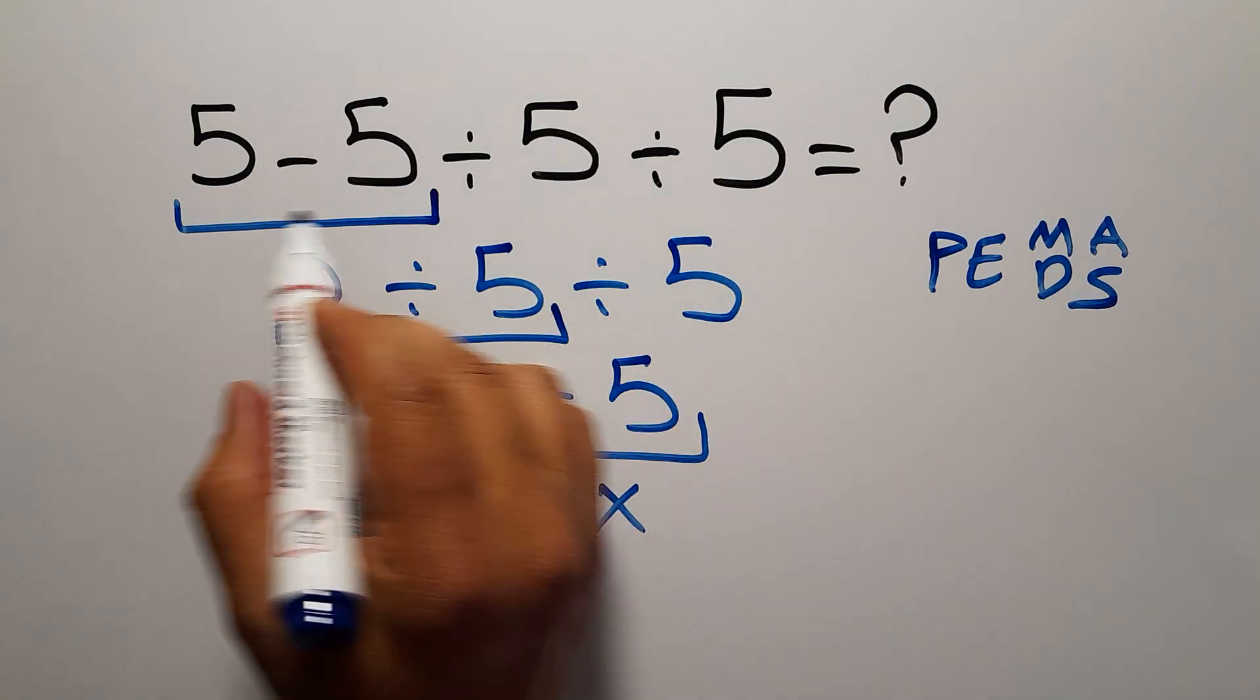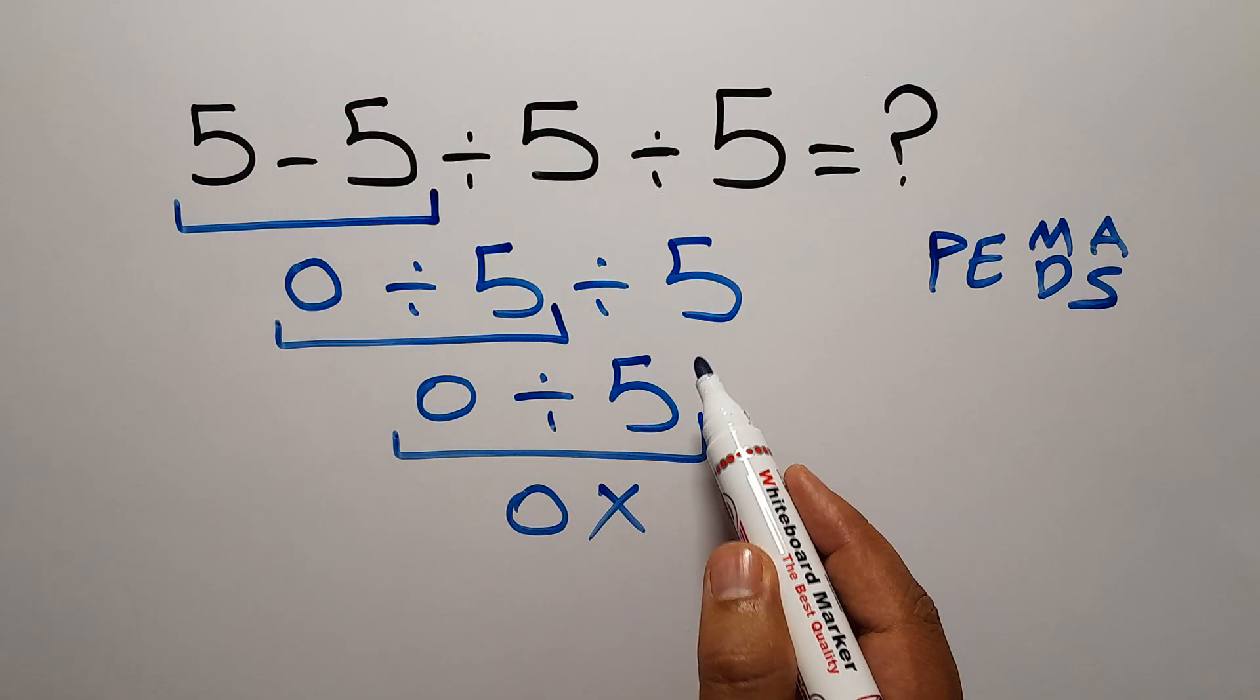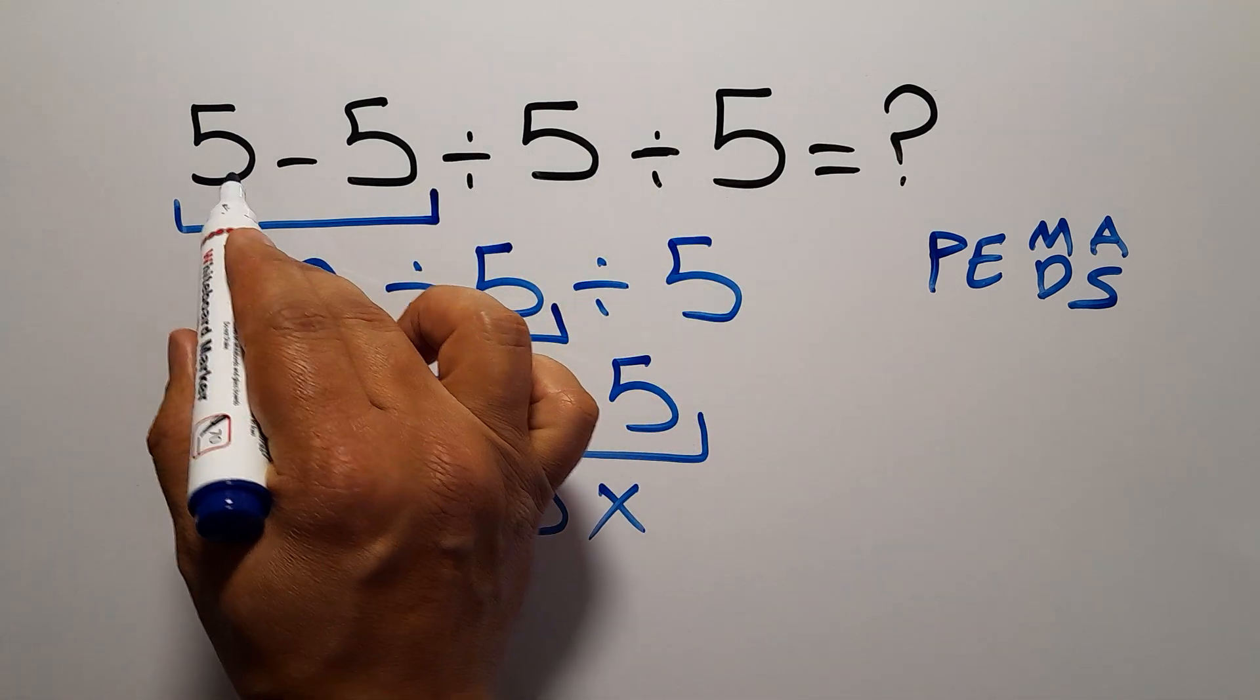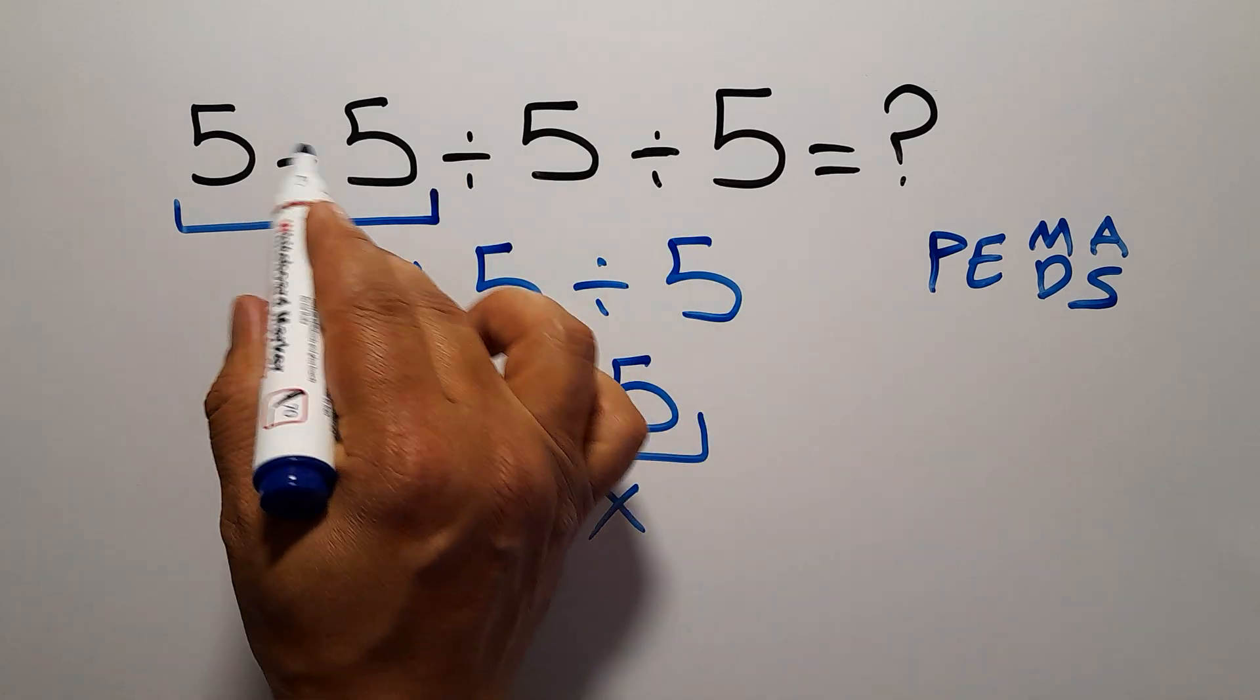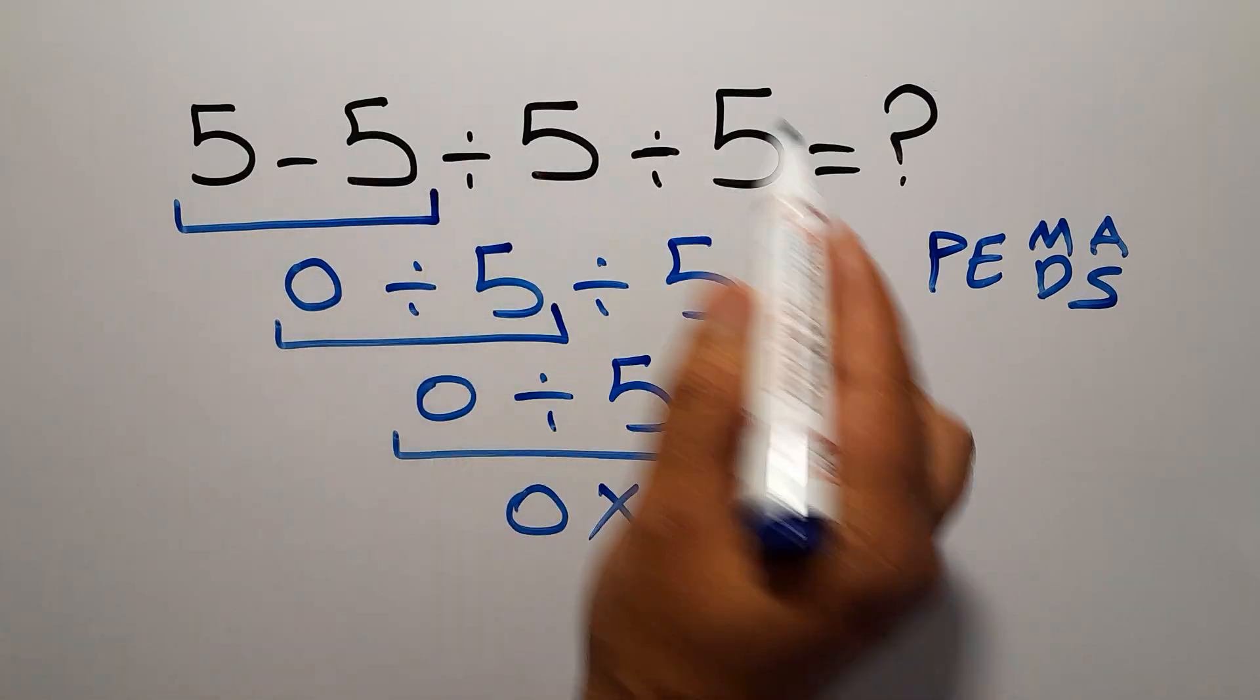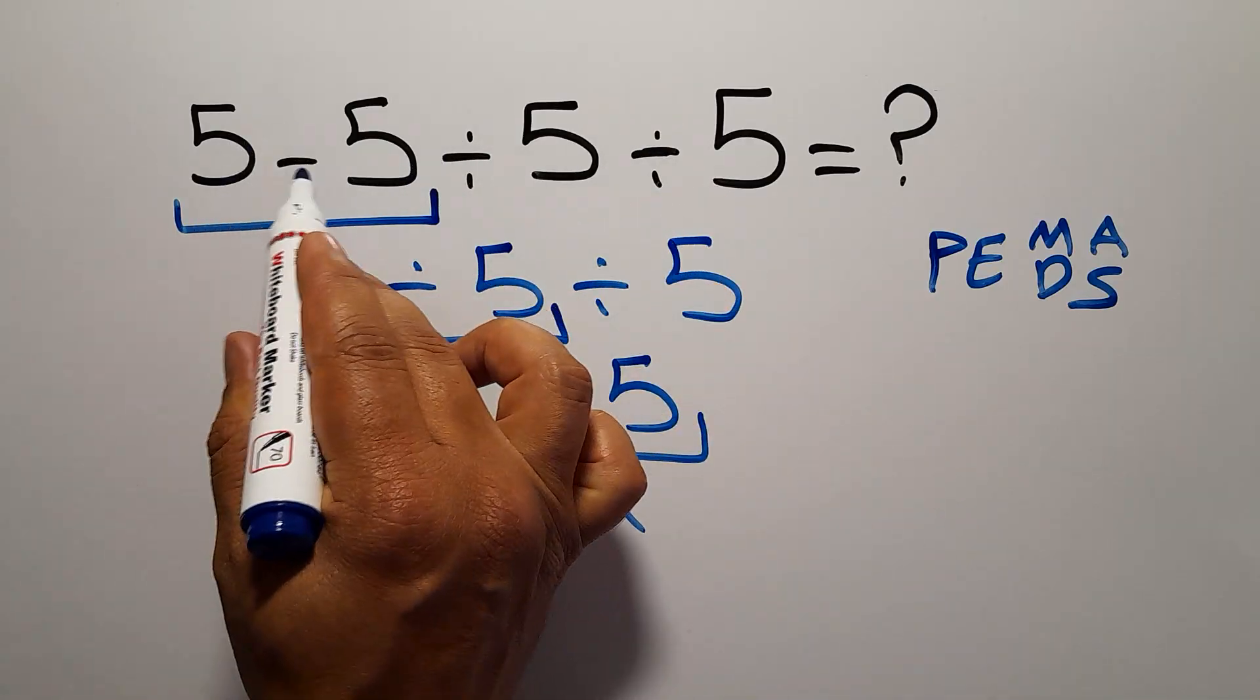So here in this expression, first we have to do this division, not this subtraction. In this expression, we have two divisions and one subtraction. Division comes before subtraction. And when we have more than one division in an expression, we have to go from left to right. So first, we have to do this division, then this division and finally this subtraction.